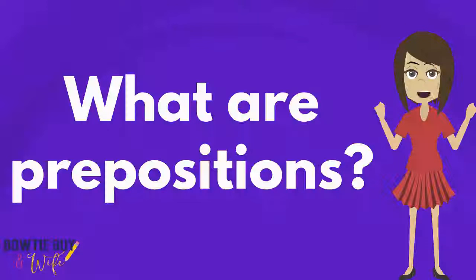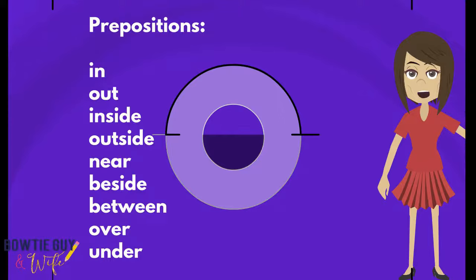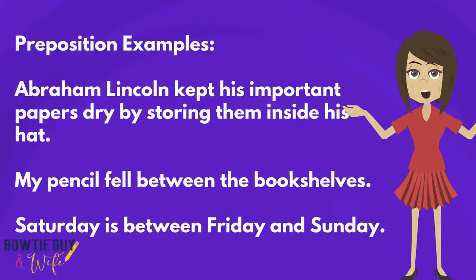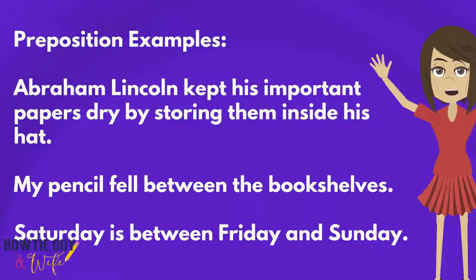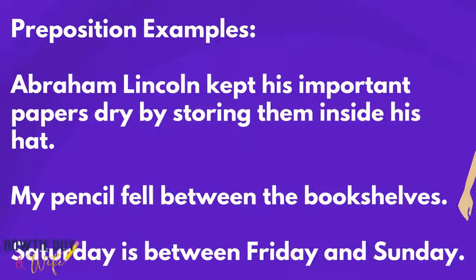What are prepositions? Prepositions indicate location — they tell us where something or someone is. Prepositions are words like in, out, inside, outside, near, beside, between, over, under. Here are some examples: Abraham Lincoln kept his important papers dry by storing them inside his hat. Where did he store them? Inside the hat. My pencil fell between the bookshelves. Saturday is between Friday and Sunday.